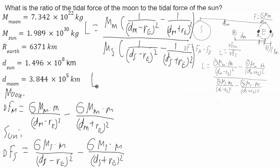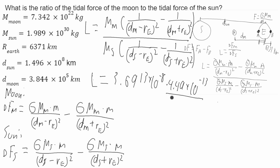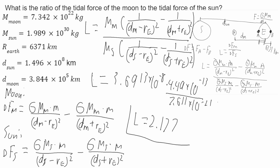When we plug in numbers — skipping a few steps of calculation — we get L equal to 3.6913 times 10 to the negative 8, times 4.49 times 10 to the negative 13, over 7.611 times 10 to the negative 21, and we get that L is equal to around 2.177. So it turns out that the tidal force of the moon is pretty close to the tidal force of the sun. That's your final answer. Thank you for watching.